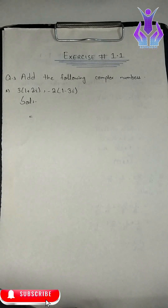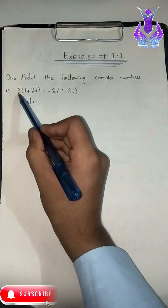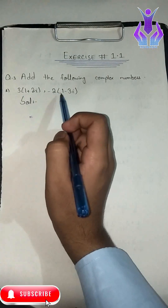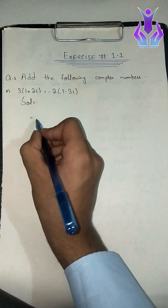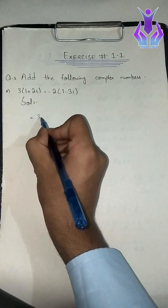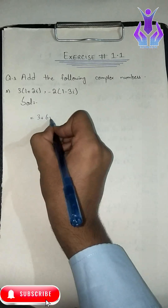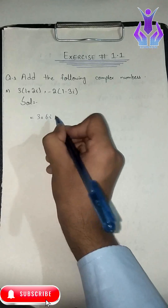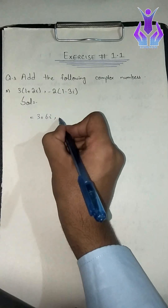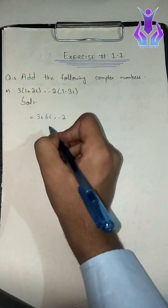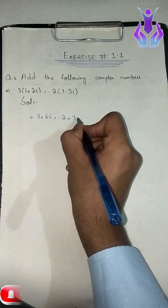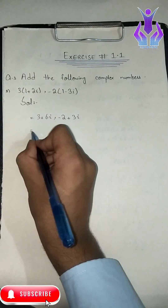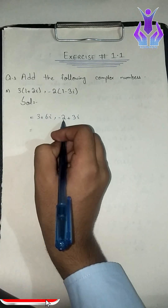To add them, we will multiply the coefficient. 3 into 2 gives 6 iota. Minus minus gives plus, so two threes are six iota. Now for the real part, we add them together.